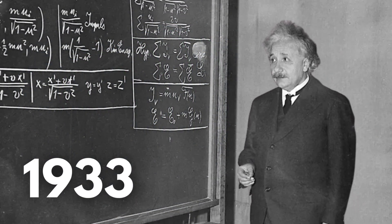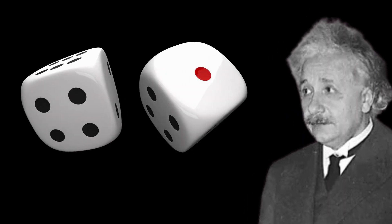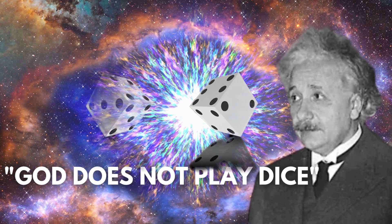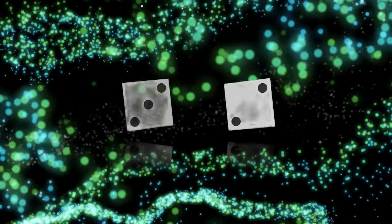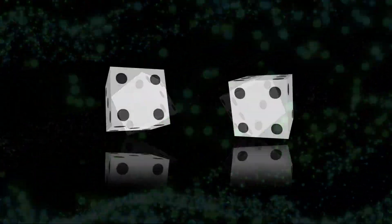In 1933, Einstein challenged the uncertainty principle of quantum mechanics, famously stating that God does not play dice. His views sparked alternative interpretations of the fundamental principles of quantum mechanics. However, subsequent research showed that the uncertainty principle was indeed valid, and that quantum mechanics had numerous applications.